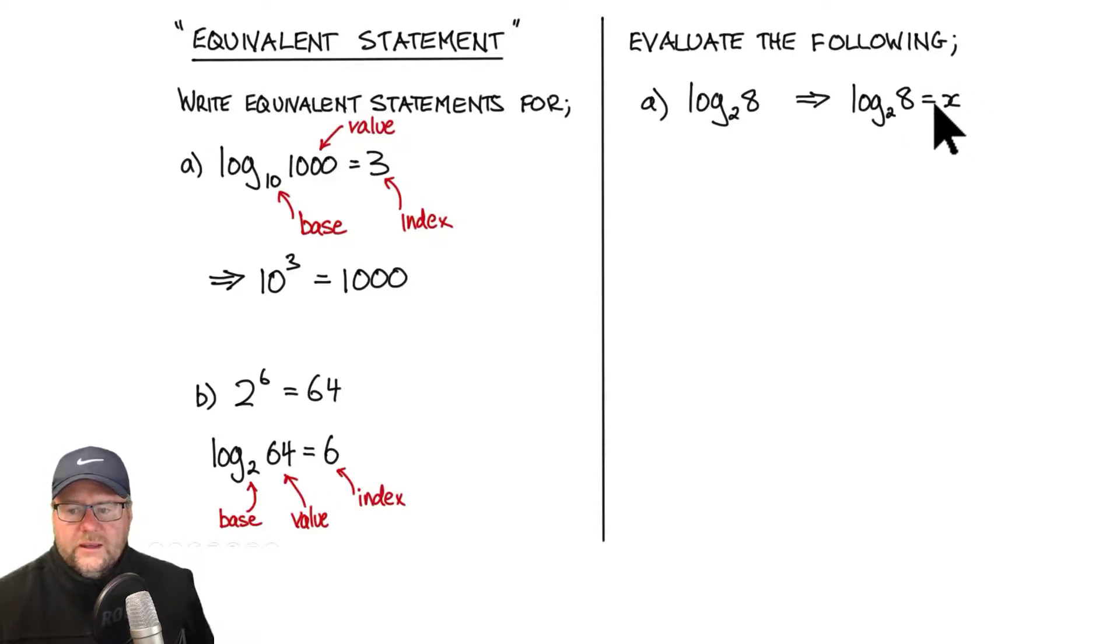Log base 2 of 8 equals some number. Now I'm going to rewrite that, the equivalent statement, in its index form. I've got a base of 2. I've got an index of x and a value of 8. So 2 to the power of x equals 8. Now can I come up with a value for x? If I think about this, what do I have to put in here to make this true? I can see that that's 2 times 2 times 2. In other words, 2 to the power of 3 gets me 8. So my value for x must be 3. So log base 2 of 8 equals 3.